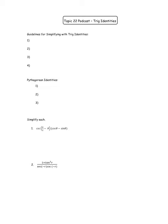Hi everyone and welcome to the Topic 22 podcast. This is Mrs. Campbell speaking, and in this podcast we're going to review some of the topics from Topic 22. This whole topic is about trig identities. You have a sheet with the reciprocal identities, quotient identities, odd and even identities, and co-function identities. We'll also review the Pythagorean identities and then practice using them as we do some simplifying.